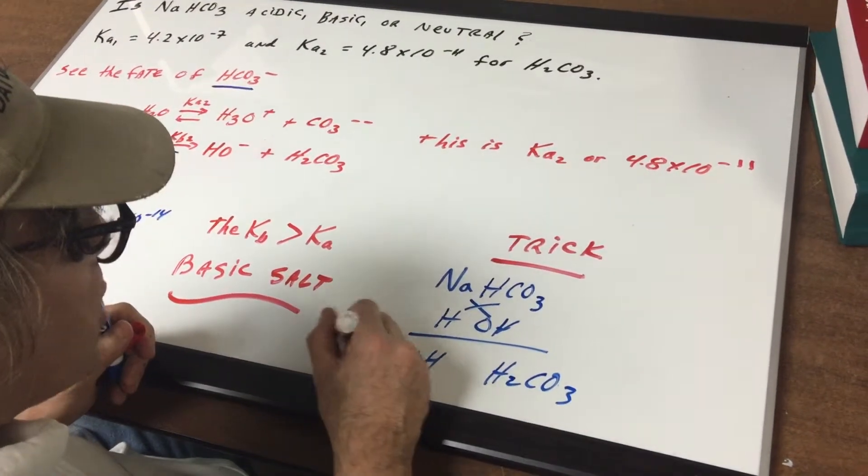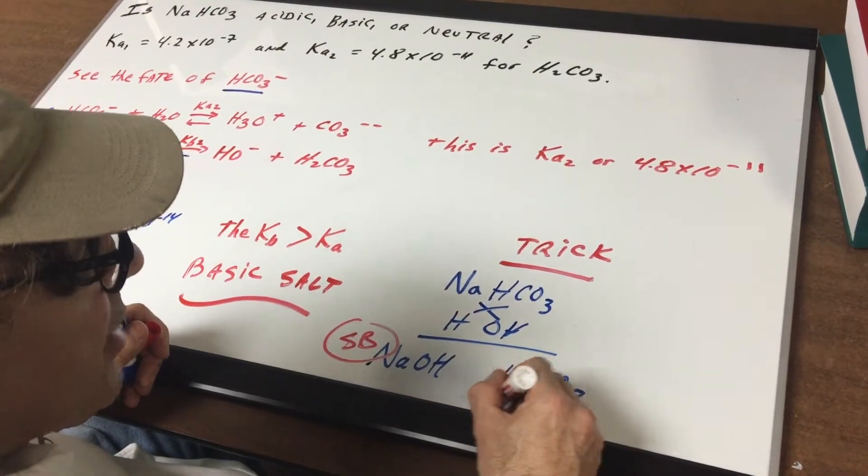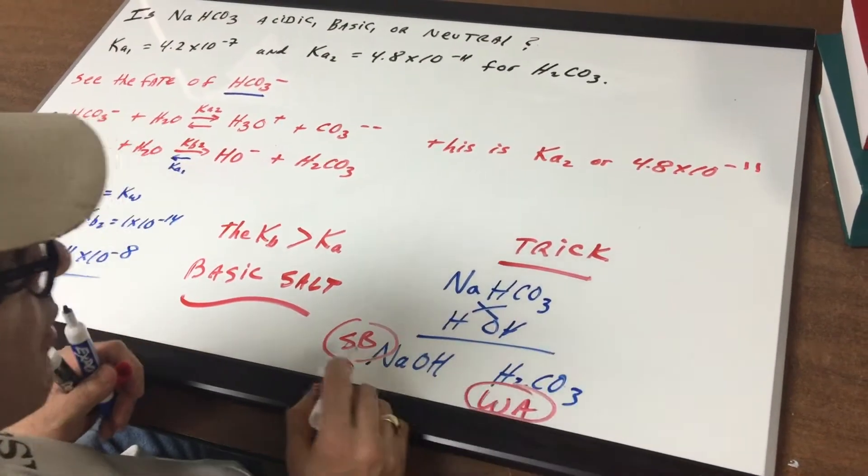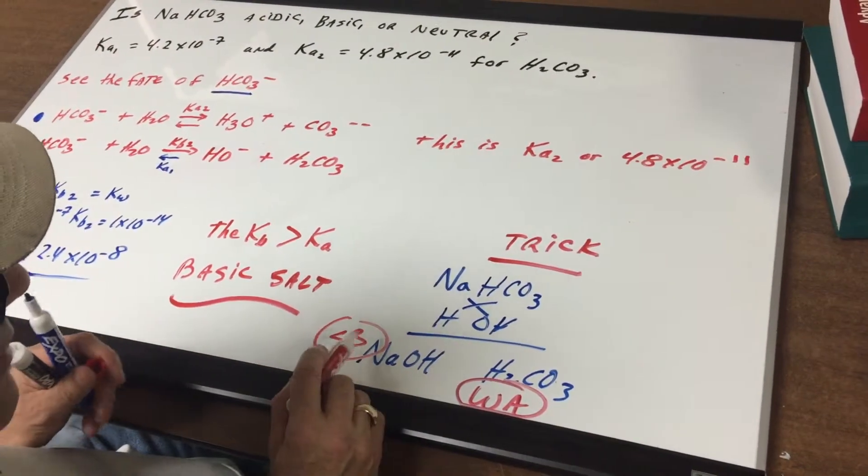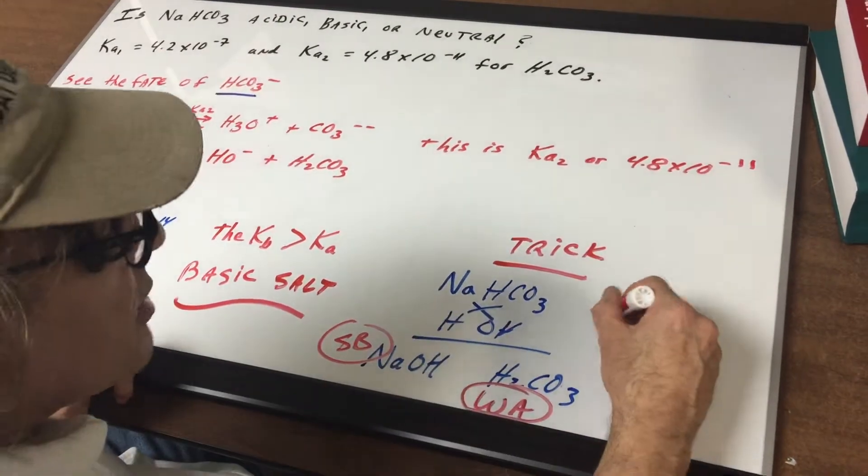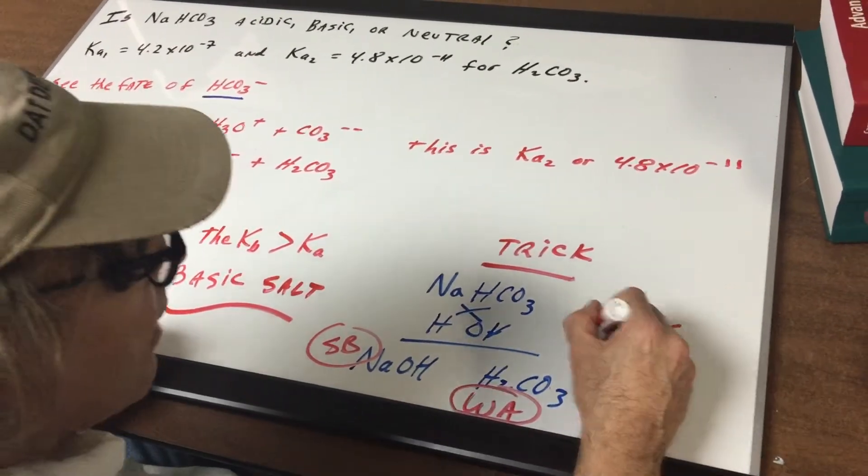This represents a strong base. This represents a weak acid. The stronger component dictates the pH, so therefore it would be basic.